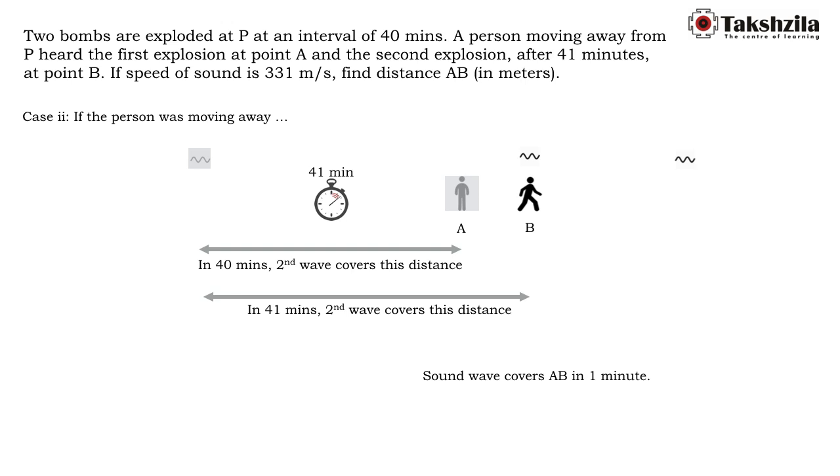And we need to find the distance. Distance is nothing but speed into time. The speed of sound is 331 meters per second, time is one minute, that is 60 seconds. Multiplying it gives us the distance AB. It is as simple.